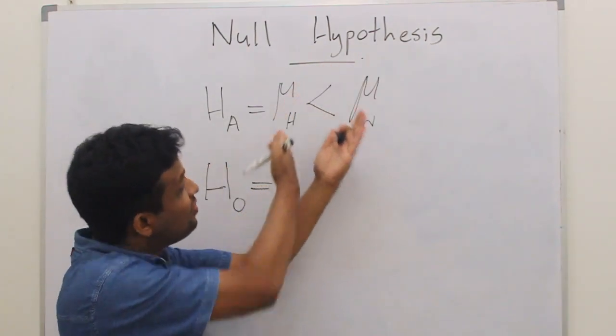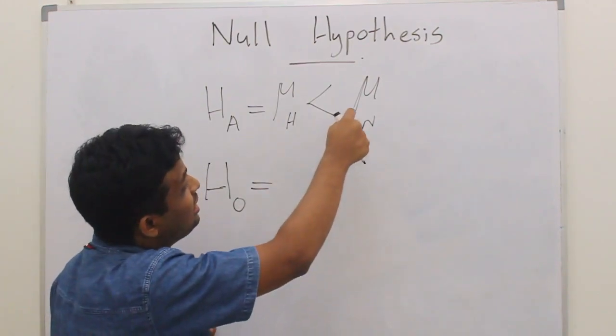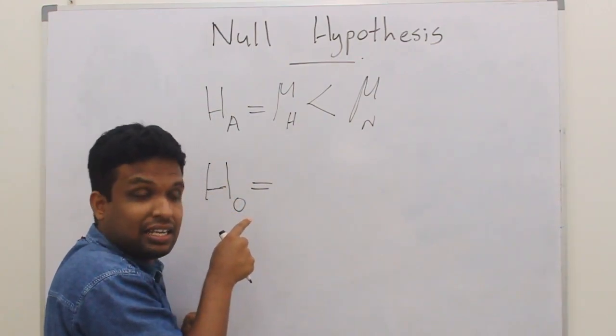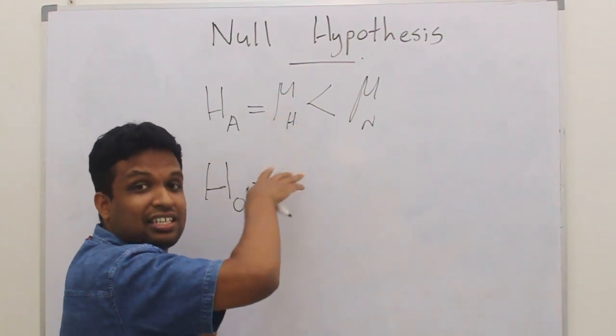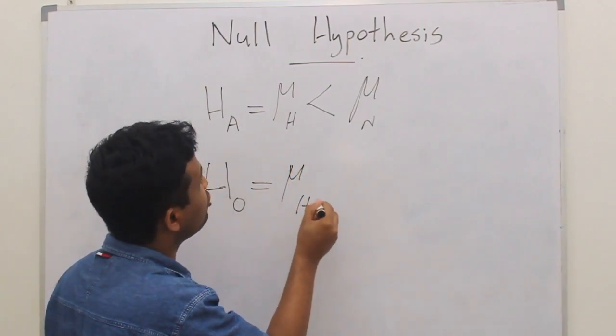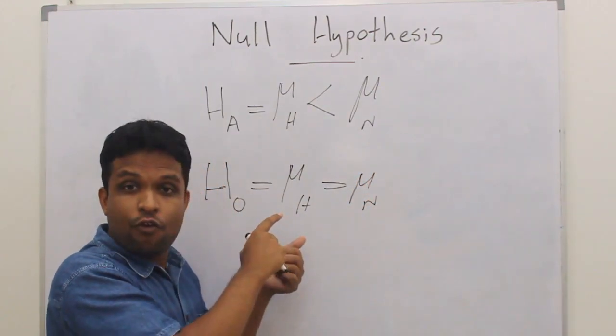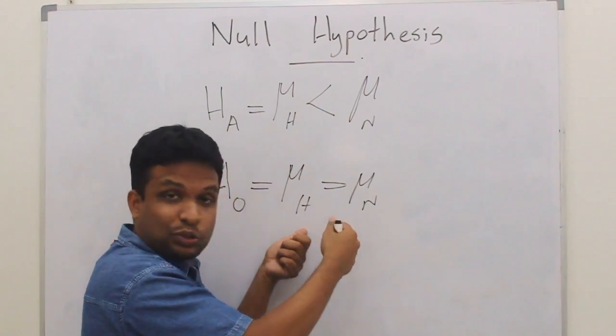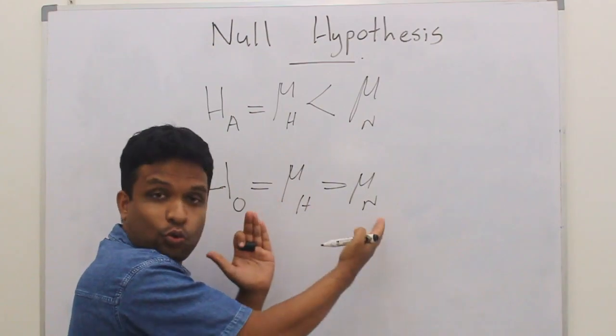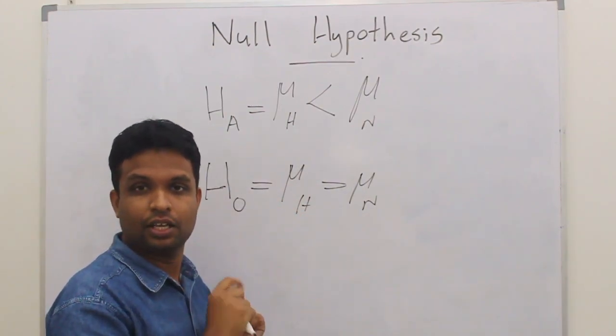Somebody might think that the other way round is the null hypothesis. No, it is not that this is bigger than this. But null hypothesis states mu_H equals mu_N. That means we need the both values to be equal. But this states that these two values are not significantly different.